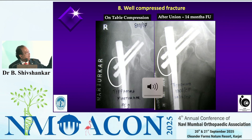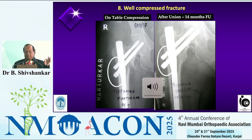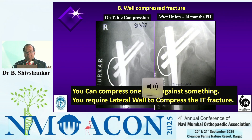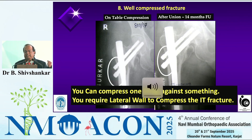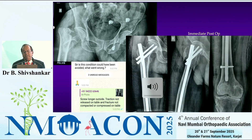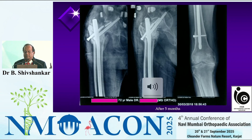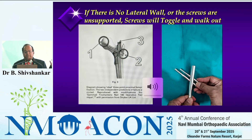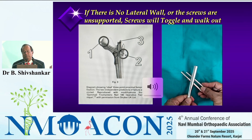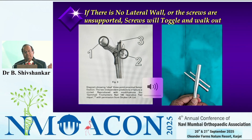If you see on day one the head of the screw is touching against the lateral wall, and at 14 months in a 75-year-old lady at the time of union the screw head is still touching the lateral wall — beautifully compressed on day one with no further collapse. You require something to compress against something. Here the lateral wall is available so I compressed the fracture against it. If that compression is not there or the screw is toggling out, it is an invitation for failure — the screw can migrate in or out. Having a lateral wall support is very important.